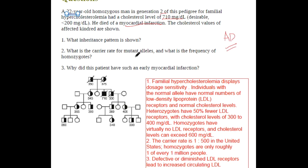What is the carrier for mutant alleles and what is the frequency of homozygotes? The carrier state is 1 in 500 in the United States, and homozygotes are only 1 in every 1 million people.